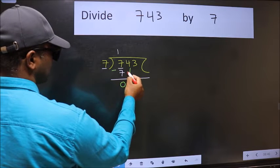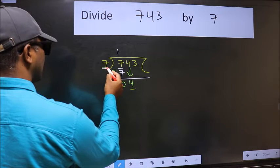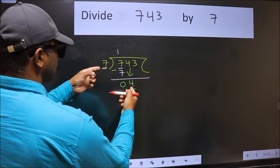After this, bring down the next number. So 4 down. Now here we have 4 and here 7. 4 is smaller than 7.